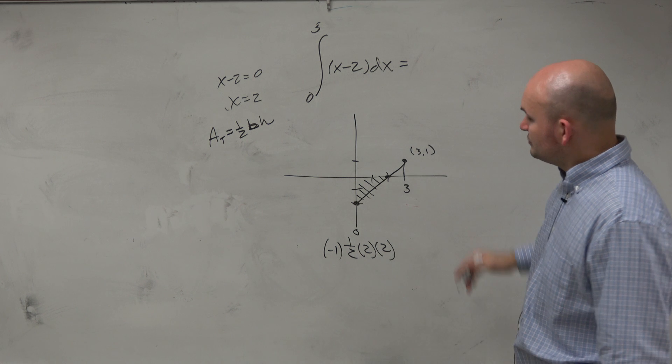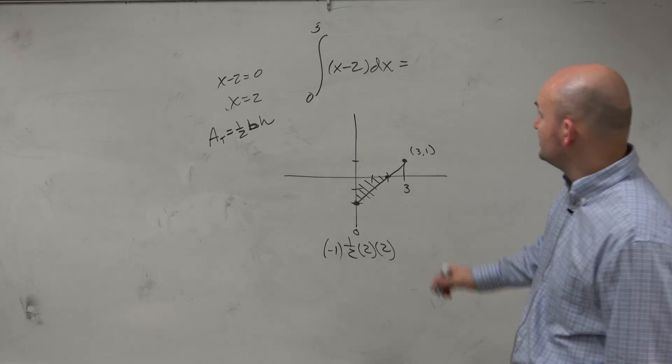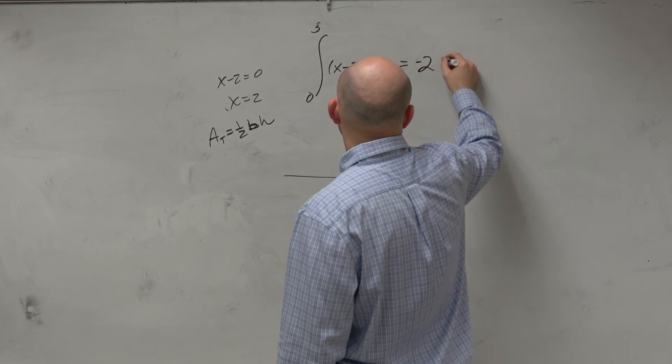So that's going to be negative. So therefore, we have 2 times 2 is 4, times 1 half is going to be 2. So that's going to be a negative 2 plus.